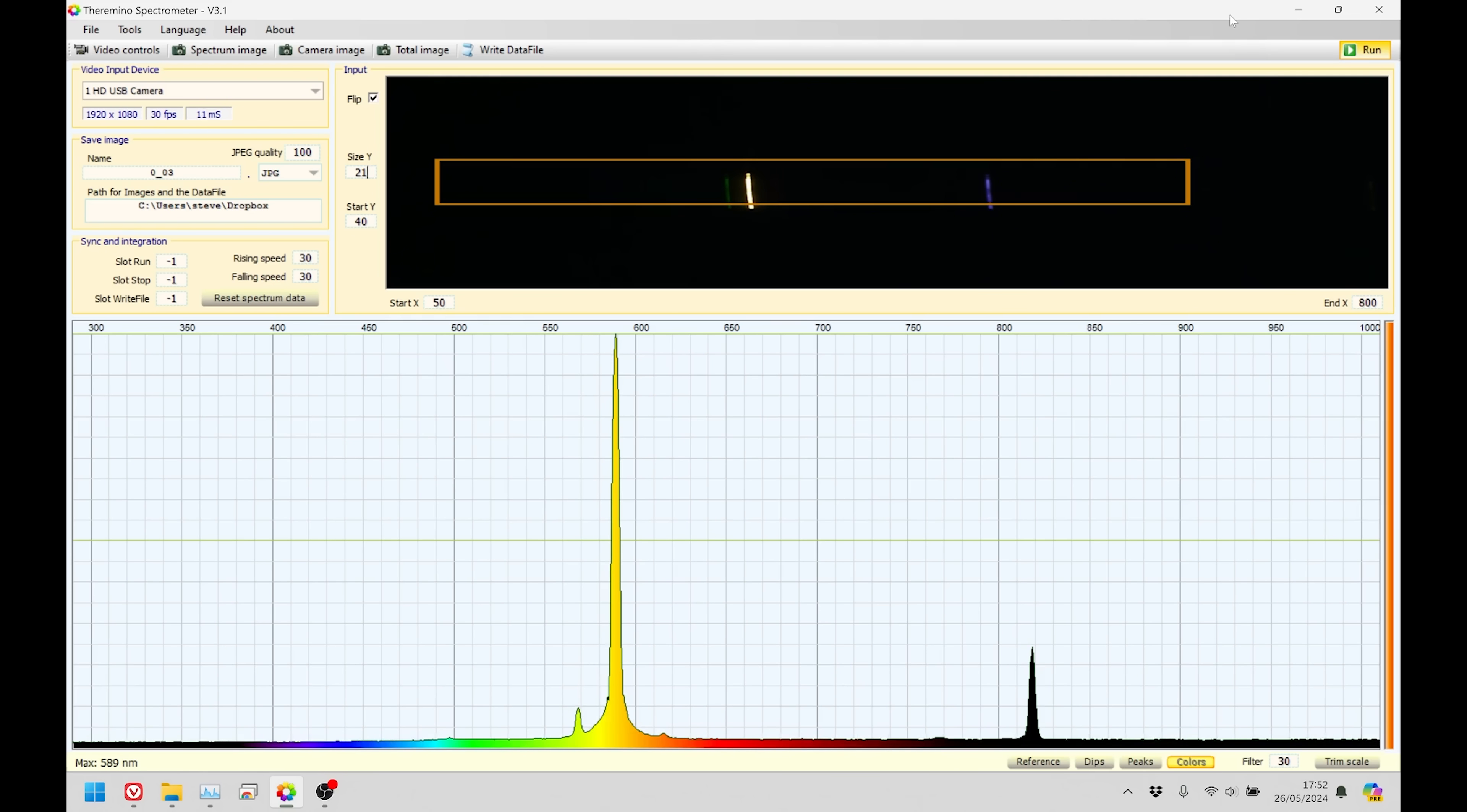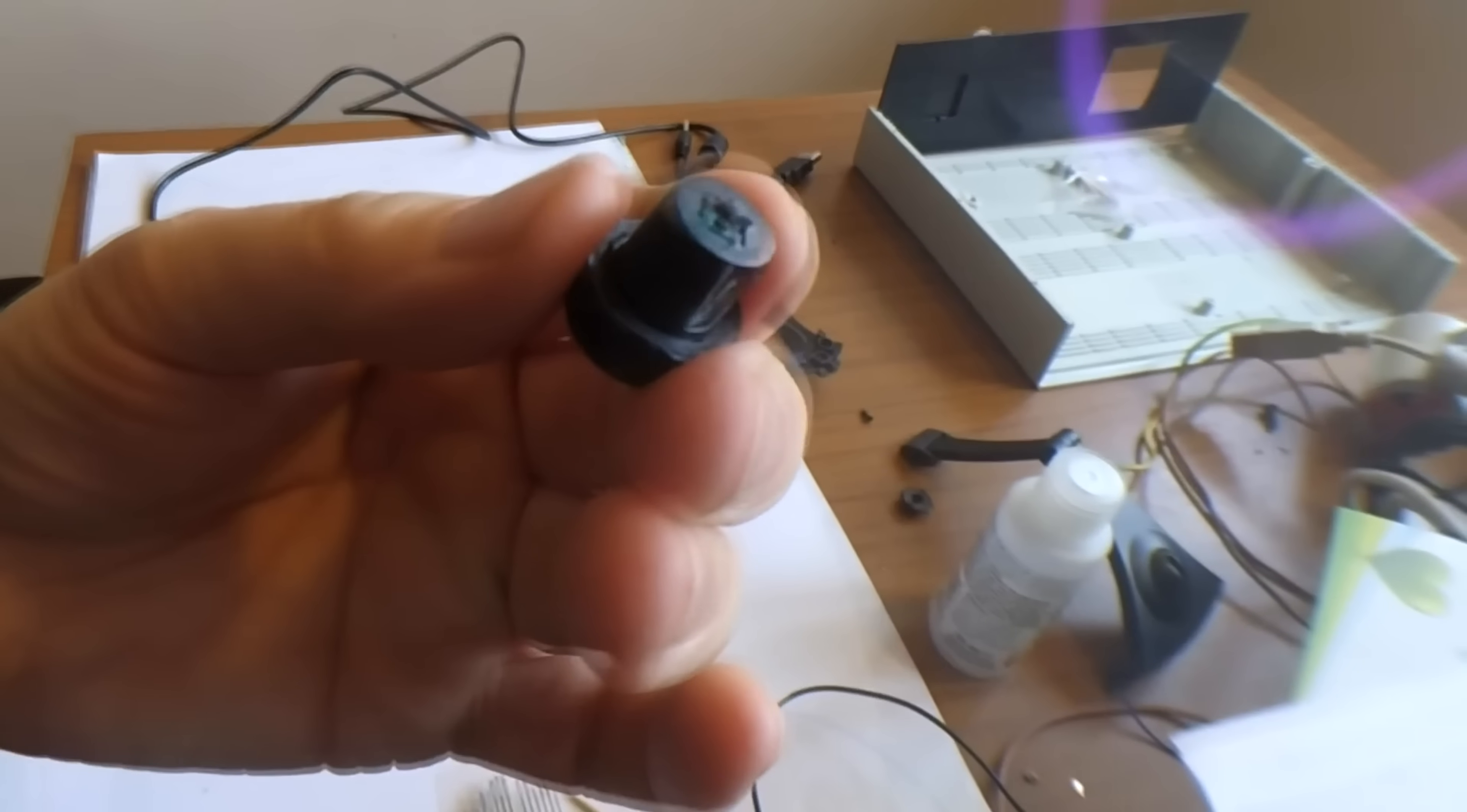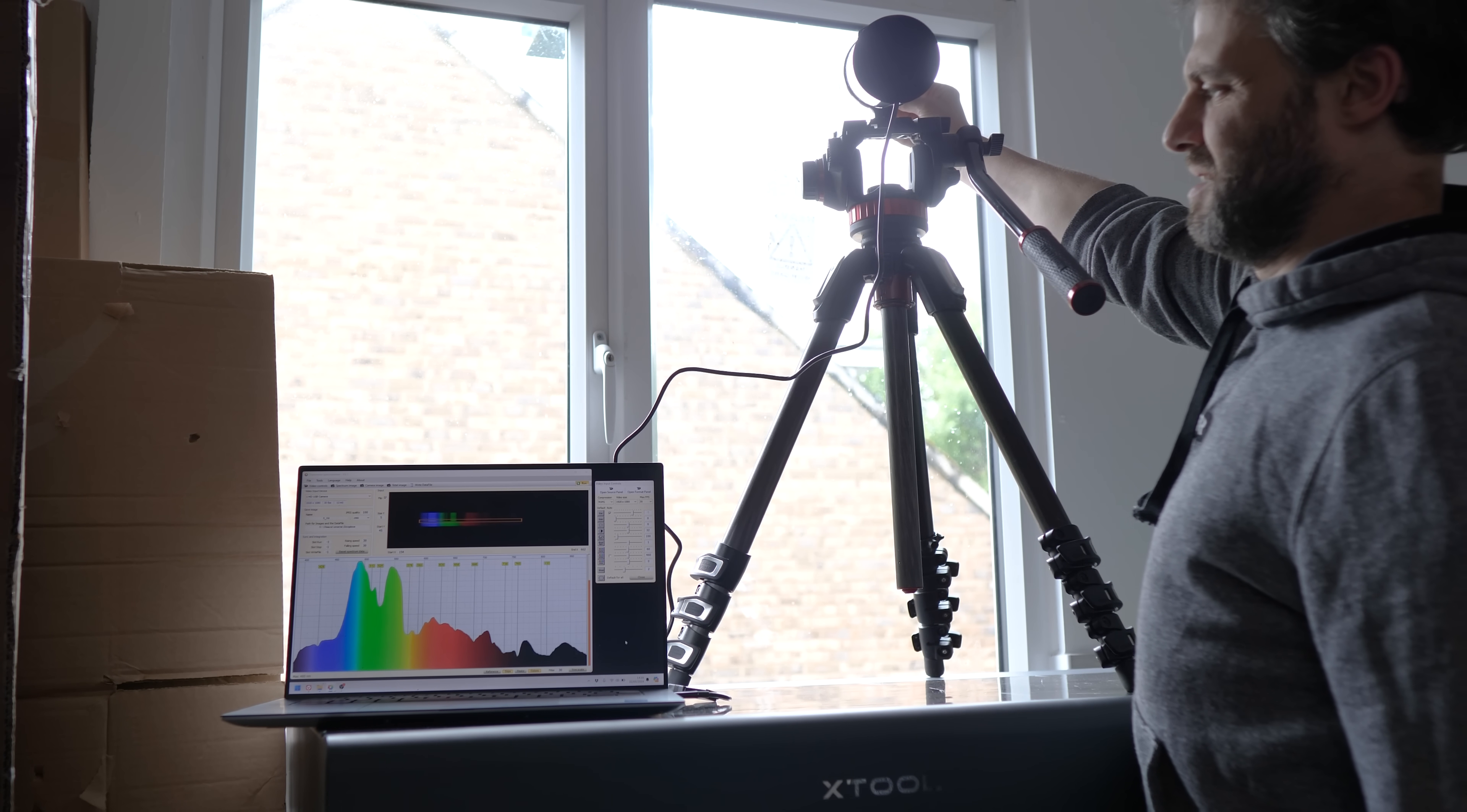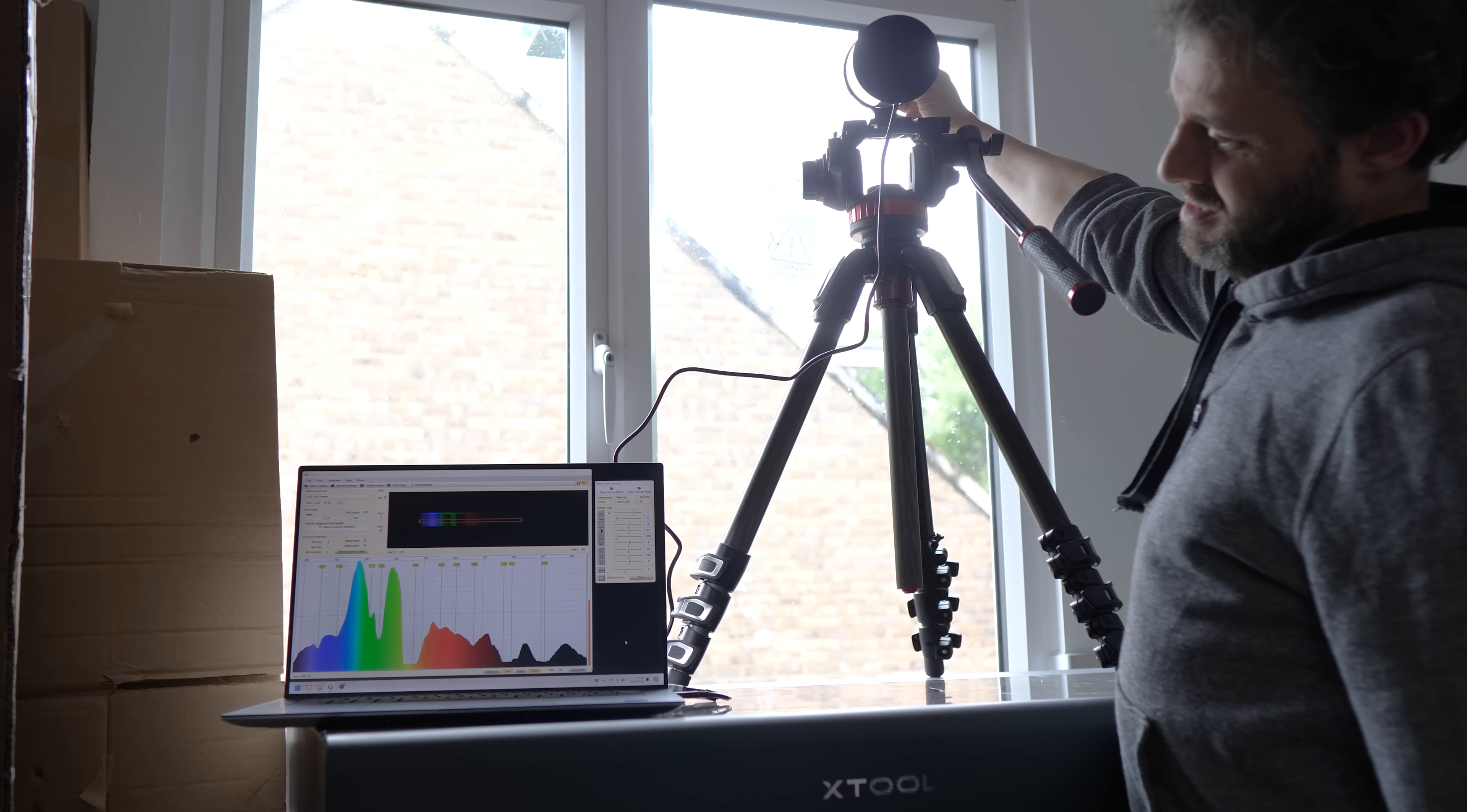The reason the webcam inside this device can see infrared and a bit of ultraviolet is because all webcams can. It's just most of them have a filter to block those parts out. But that filter was removed from the webcam inside this device. Look, this is Chris Wesley removing the filter before putting it into one of his devices. It's a great bit of kit, by the way. You could spend maybe a thousand pounds on a similarly capable spectrometer. But this one, made from 3D printed parts and a modified webcam and a cardboard tube, is less than 200 pounds. If you're interested, there's a link to Chris's website in the description.